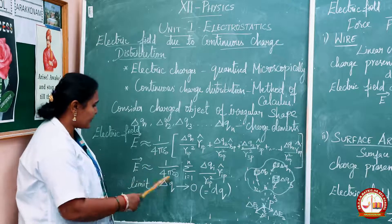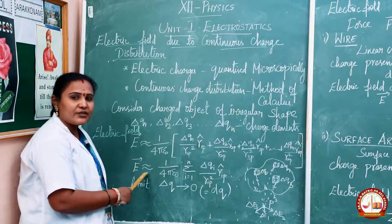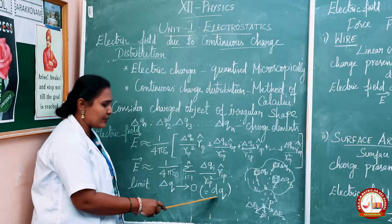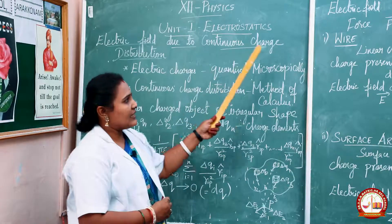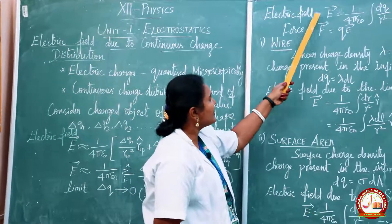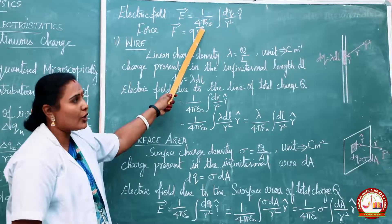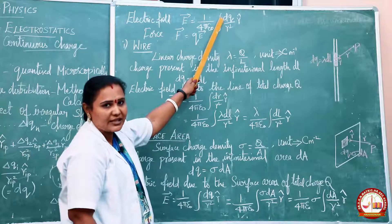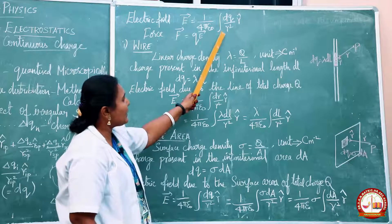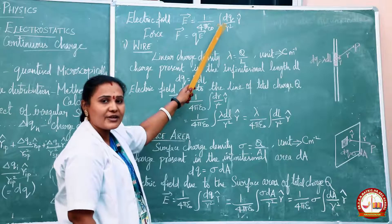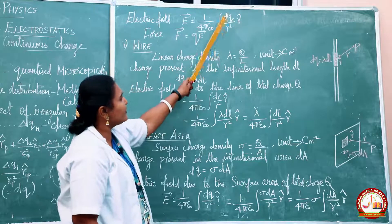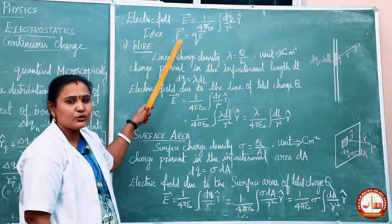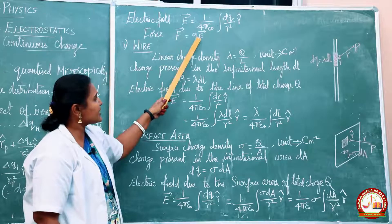In this expression we have seen that it is only an approximate value. So instead of using the approximation, we can use the integral method. When the limit ΔQ tends to 0, we can take this value as dQ. So the electric field in terms of integration: E vector is equal to 1 divided by 4πε₀, integral of dQ divided by R squared times R̂. Here dQ represents the infinitesimal charge, R represents the distance of the point P from the charge element, and R̂ represents the unit vector from the charge to the point P. We already know that force F vector equals Q times E vector.